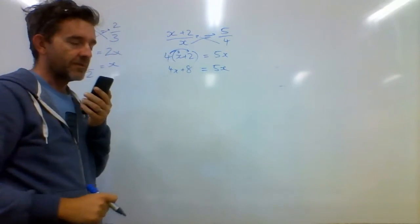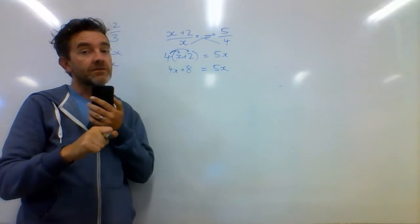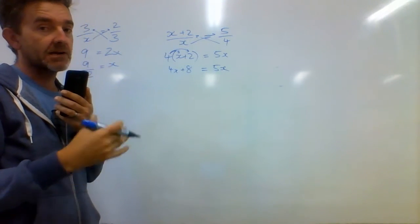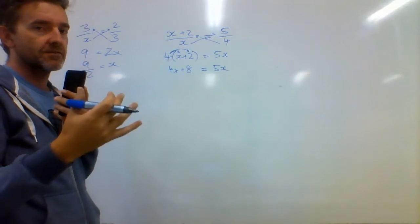Now I need to get all of my X's on one side. I'm going to get rid of the X that has the lower value in front of it. It's going to be easier to take away 4X. If I take away 5X, I'll end up with negative X. Who wants that?